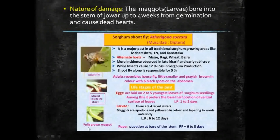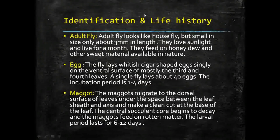This is the life cycle in which you can see the adult fly, the maggot inside the shoot, and the full-grown maggot. Moving to identification and life history — the adult fly looks like a house fly but is smaller in size, only about three millimeters in length.